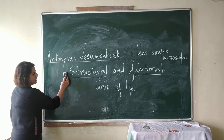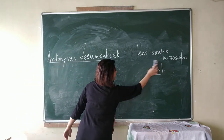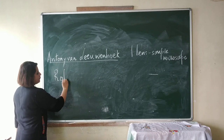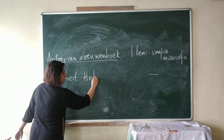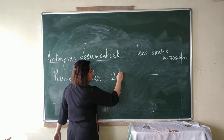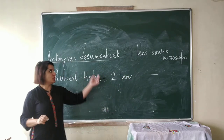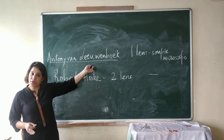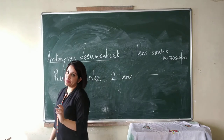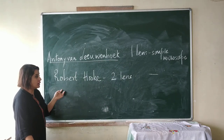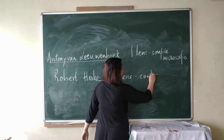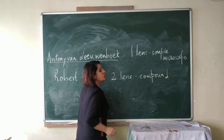Then later, another person came — Robert Hooke. He made a microscope with two lenses. Antoni van Leeuwenhoek was the first person to make a microscope; his microscope had only one lens and it was called a simple microscope. Later, Robert Hooke made a microscope which had two lenses, and his microscope was termed the compound microscope.